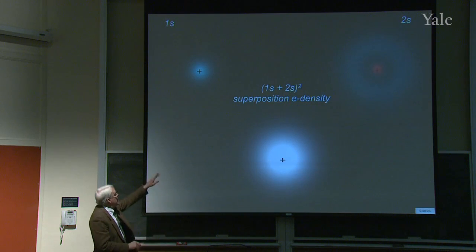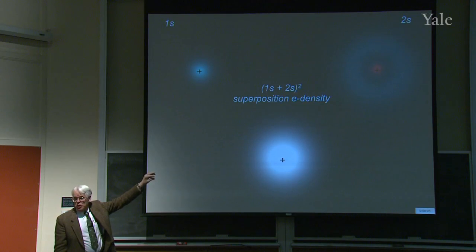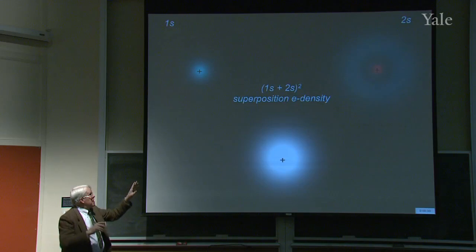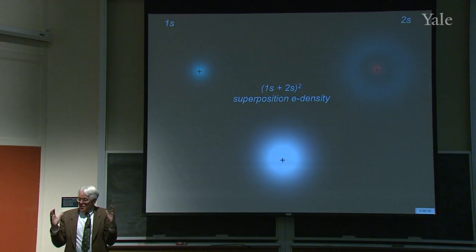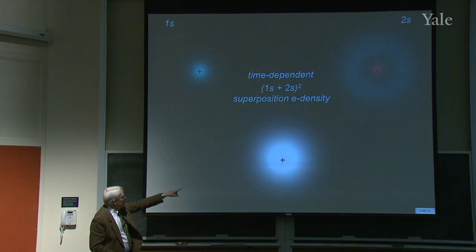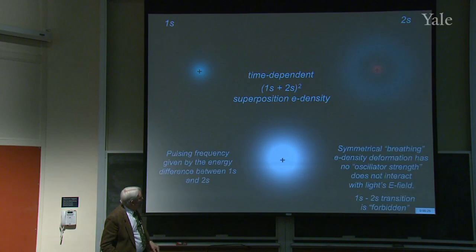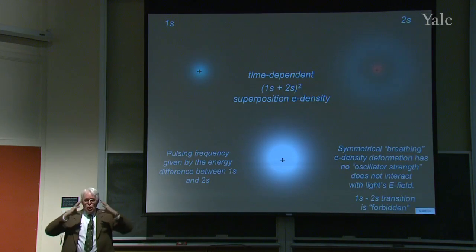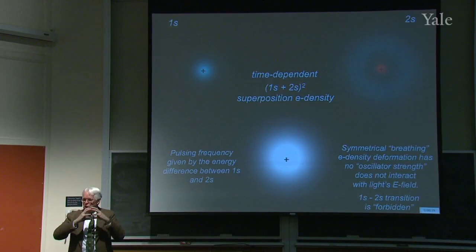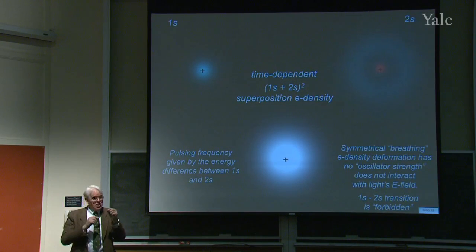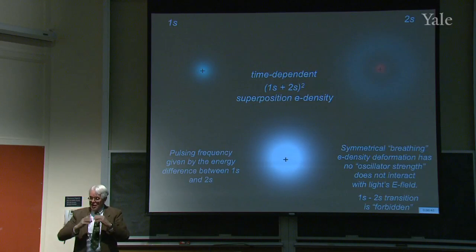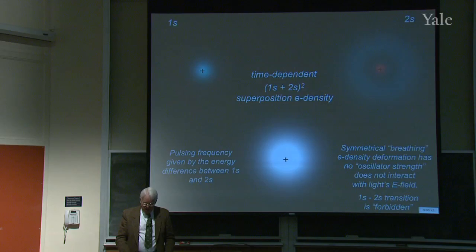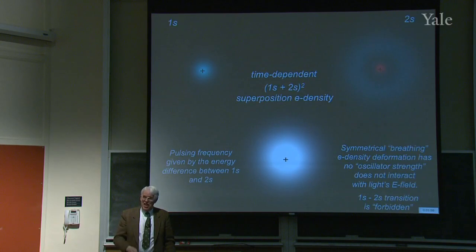For example, if you mix 1s with 2s: adding them reinforces where they overlap and gives a big sphere, but subtracting makes them reinforce in the middle and cancel on the outside. The resulting time-dependent breathing — expanding and contracting — doesn't separate the average position of the nucleus and electron. It doesn't generate a dipole vector. So that symmetrical breathing electron density deformation has no oscillator strength. It doesn't interact with light's electric field — that transition is said to be forbidden.